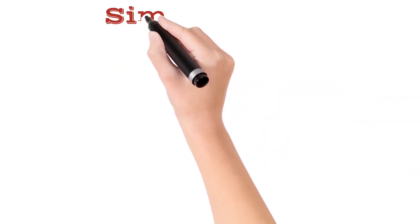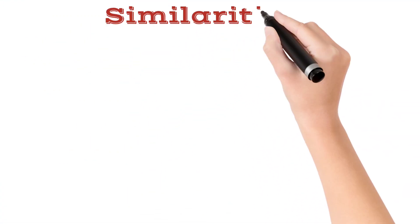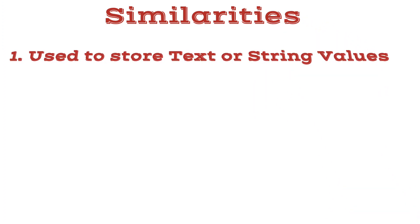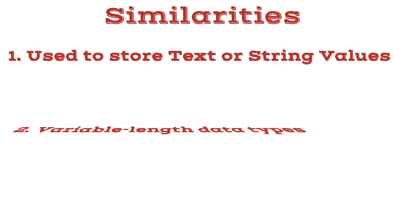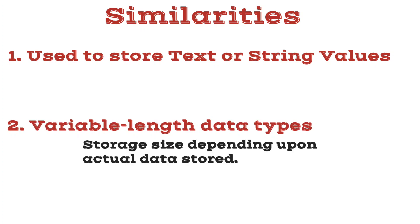While we will look into the difference between these two, it's also worth noting the similarities between them. First similarity is, both VARCHAR and NVARCHAR are character data types and used to store text or string values. Second similarity is, both are also variable length data types, so storage size depends upon actual data stored.